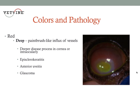So when we see this paintbrush pattern of deep corneal vascularization, we want to think about a deep corneal process, such as the presence of an infected corneal ulcer. We may also see an extension of severe inflammation from the sclera, in the case of episcleritis. And we may also see a deep corneal vascular pattern associated with intraocular disease, whether it's associated with anterior uveitis, the presence of intraocular neoplasia, or in severe cases of glaucoma.